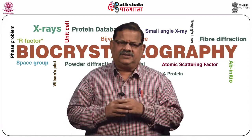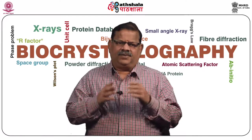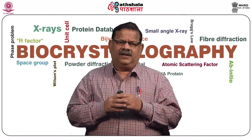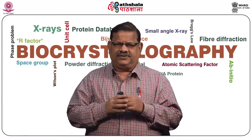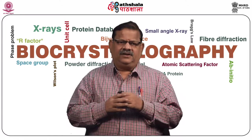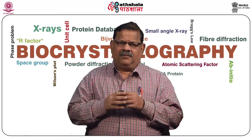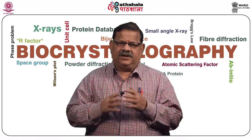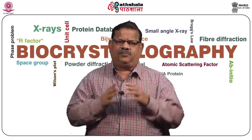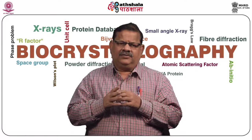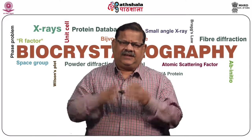Unit cells are of two types: simple or primitive cells, denoted by the symbol P or R, and non-primitive cells like body-centered (I), face-centered (F), and base-centered (C). Primitive cells have only one lattice point per cell, while non-primitive cells have more than one.